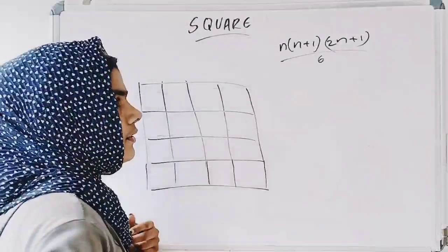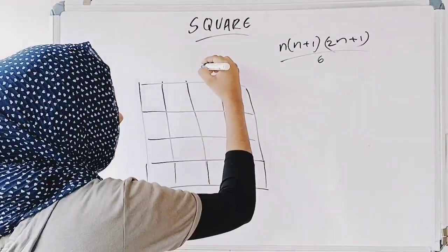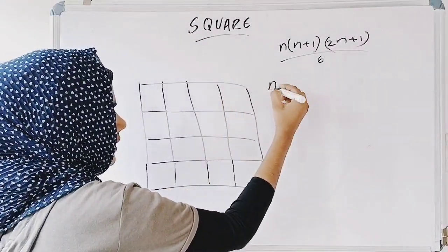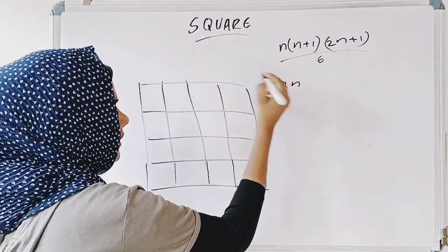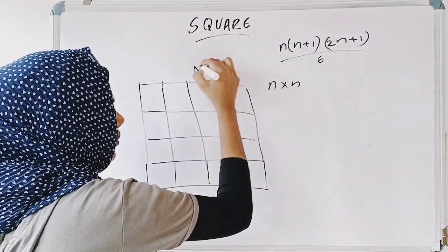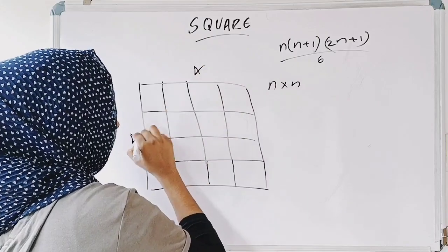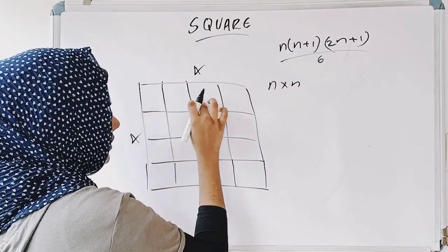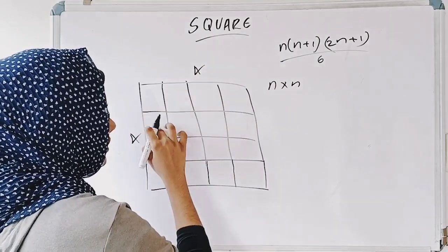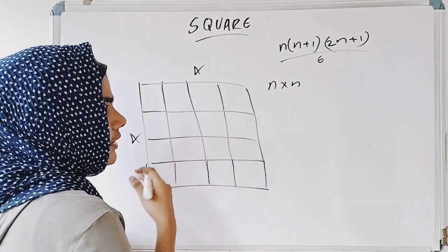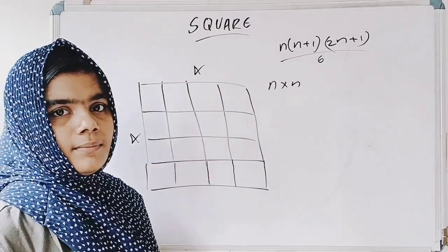Now let's count squares for n into n. Here n is 4. We count 1, 2, 3, 4 on one side and 1, 2, 3, 4 on the other side — the same number.